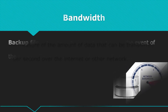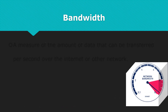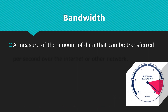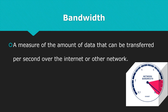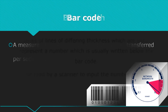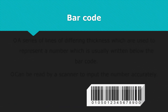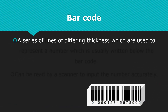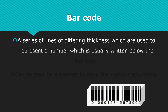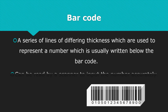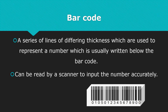Bandwidth is a measure of the amount of data that can be transferred per second over the internet or other network. Barcode is a series of lines of differing thickness which are used to represent a number, which is usually written below the barcode, and it can be read by a scanner to input the number accurately.